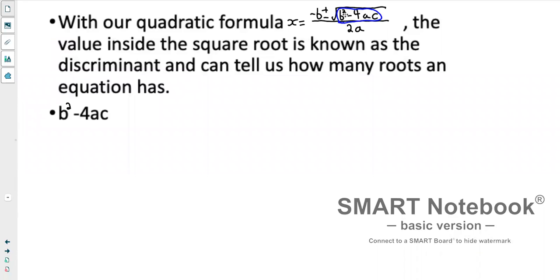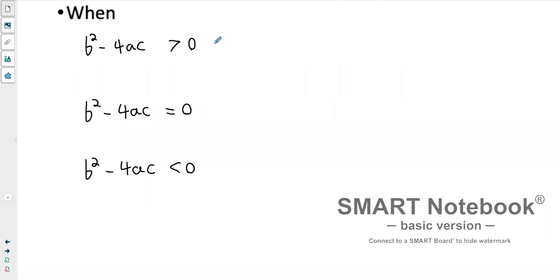When b² - 4ac is greater than zero, then we have two distinct roots. Because if this value is larger than zero, we're adding and subtracting something. So once again, when b² - 4ac is greater than zero, we have two roots.